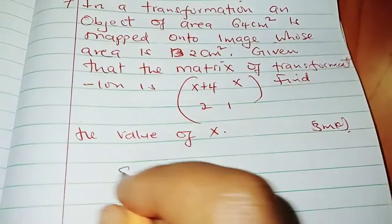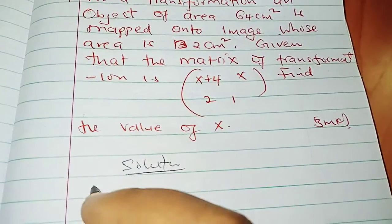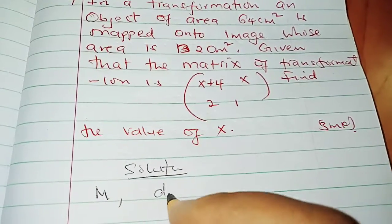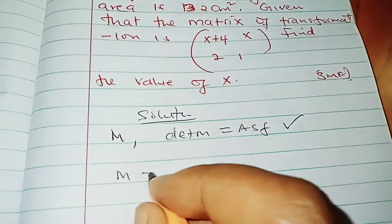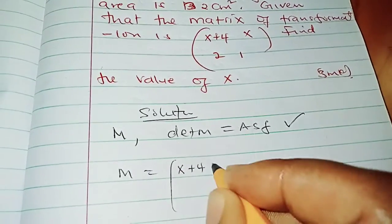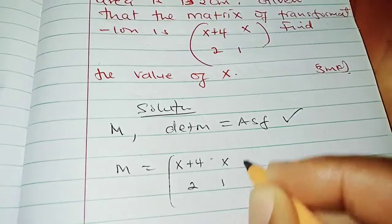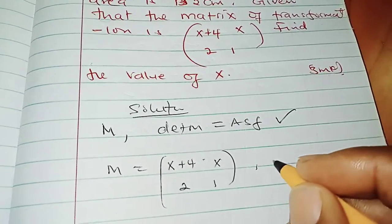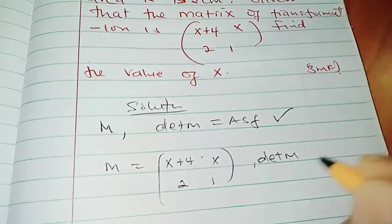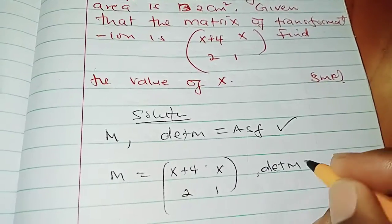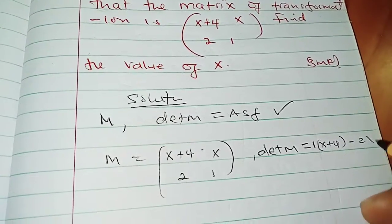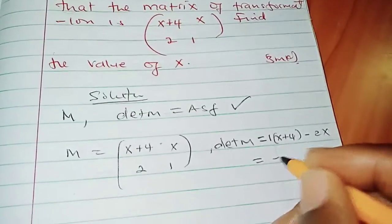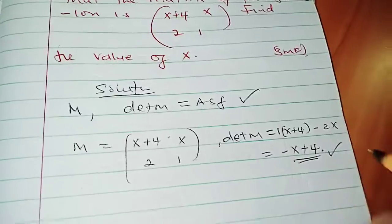So what we know is that if you have a matrix M of transformation, the determinant of that matrix M equals the scale factor. That's very important. So we have to get the matrix M, which we are given. And we determine, we also evaluate the determinant of this matrix. So determinant of M, I've got to take the main diagonal minus the minor diagonal. That gives me (x+4)(1) minus 2x. So evaluating this gives me -x + 4. So that is the determinant of that matrix.